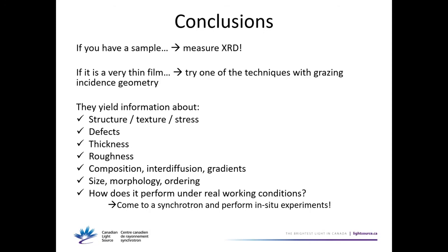An audience member asks about the characterization of spherical gold nanoparticles on the surface — thickness, distribution, or number of particles. The speaker explains they were doing GISAXS and watching the growth as it happened: first small particles here and there, then growing, then nucleating. They were interested in the growth process and learned about it by doing GISAXS at every step of the growing process.